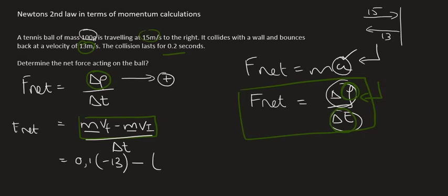Then minus. Then I put a mass and the velocity in. So the mass is still 0.1. The velocity is going to be 15, the initial velocity, because it's going 15 to the right and then the time.